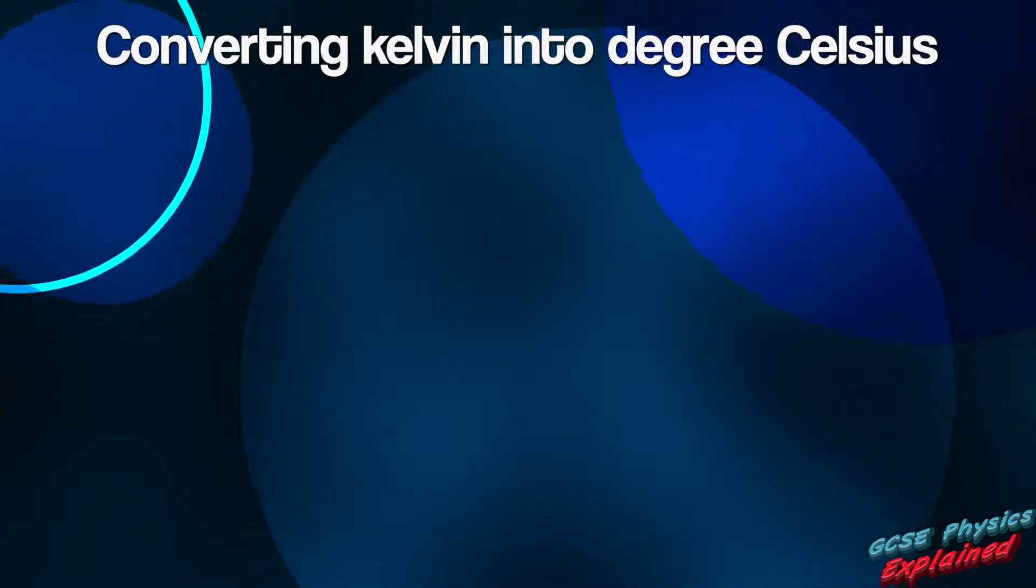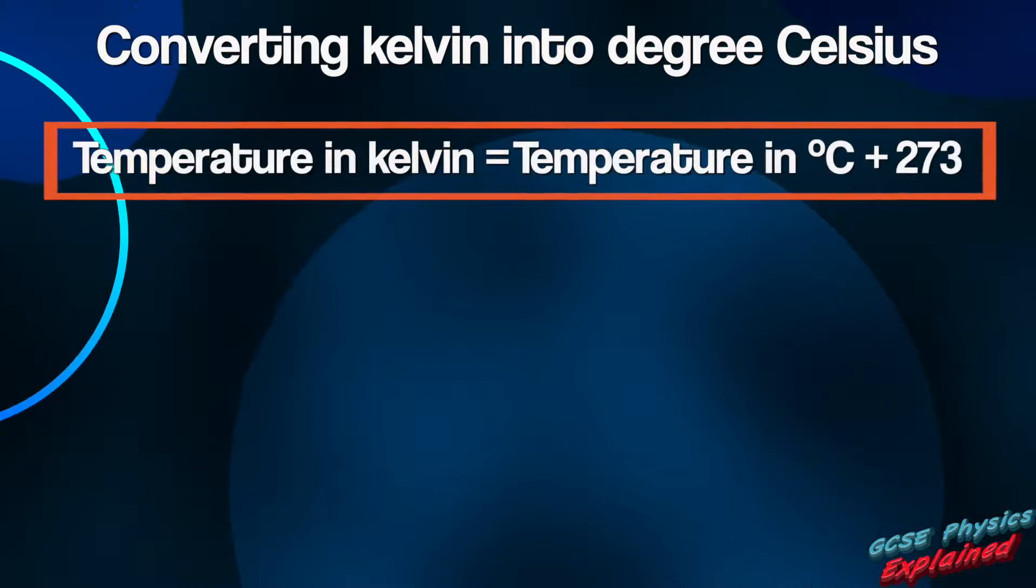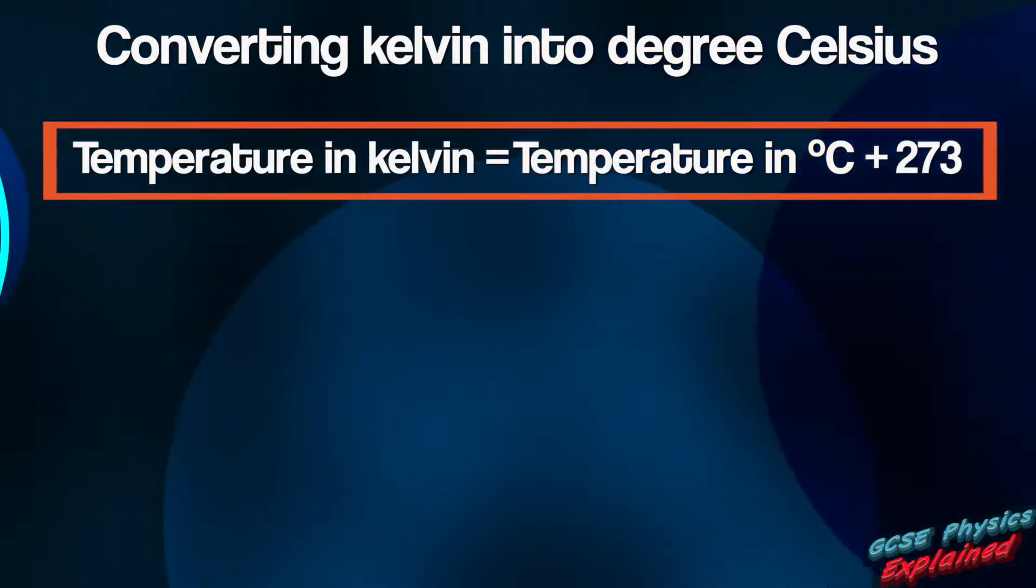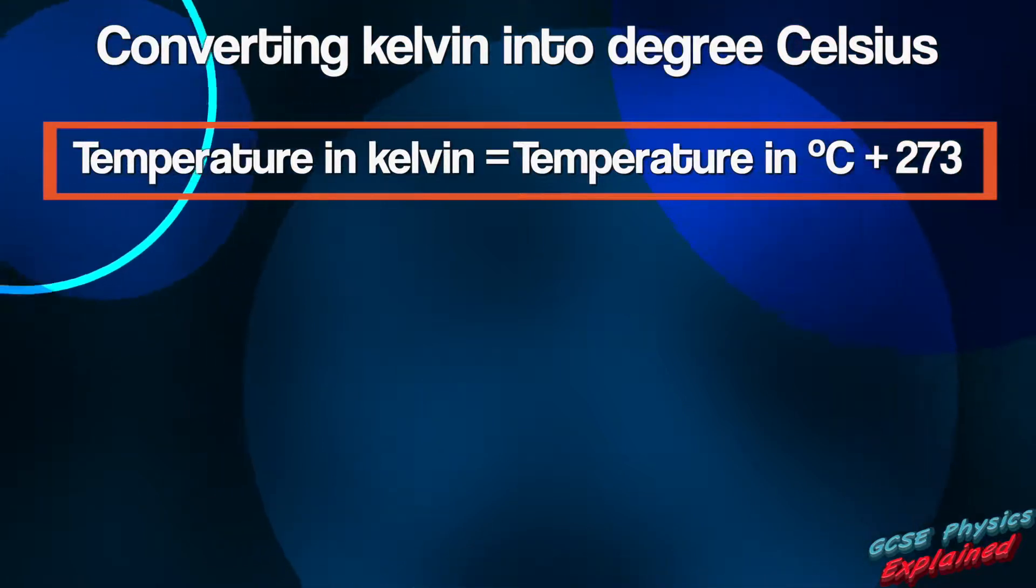Here's how to convert Kelvins into degrees Celsius: temperature in Kelvin equals the temperature in degree C plus 273. Here's an example.